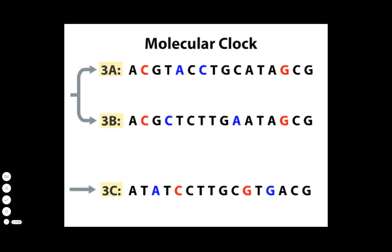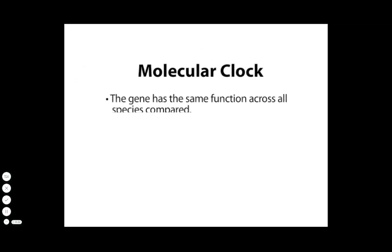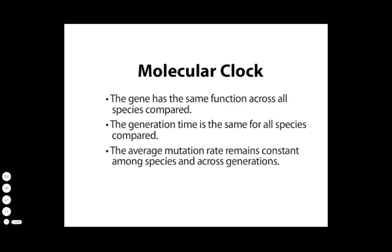In practice, the molecular clock works best for a particular gene sequence with the following features: the gene has the same function across all species compared; the generation time is the same for all species compared; and the average mutation rate remains constant among species and across generations.